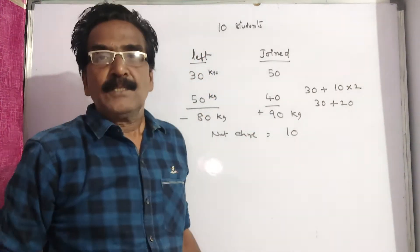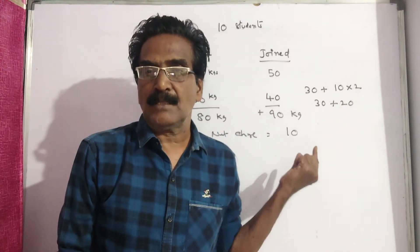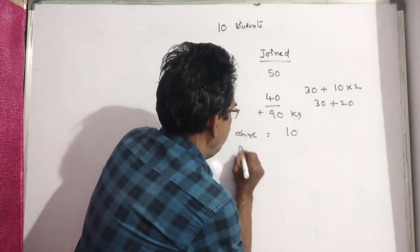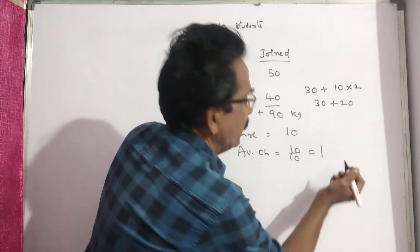Net change is equal to 10. So this is the total change. Average change is equal to 10 by 10, that is equal to 1.